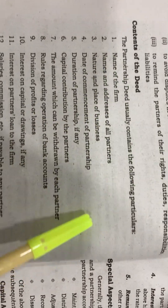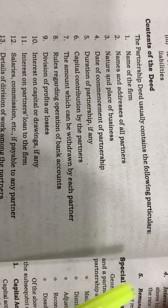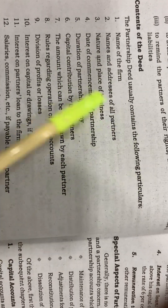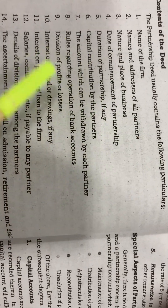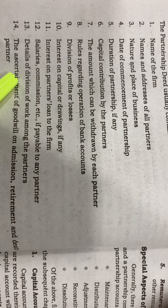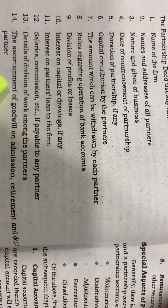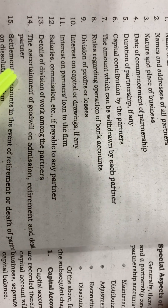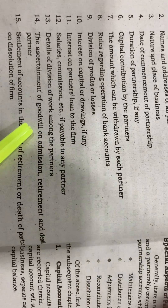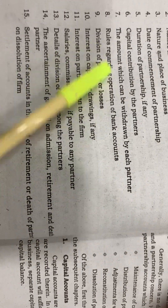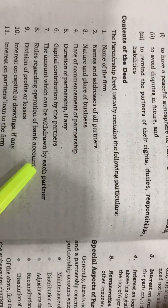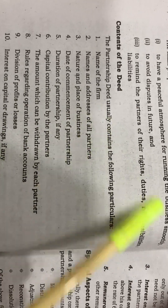What are the contents of the Partnership Deed? It includes the name of the firm, the place of the firm, its nature, the start date of the partnership, its duration, how capital is contributed by each partner, how much a partner can withdraw, bank accounts and operations, how profits and losses are divided, interest on capital and interest on drawings, the rate of interest on partners' accounts, salary and commission details for partners, and the main address of the firm and partners.